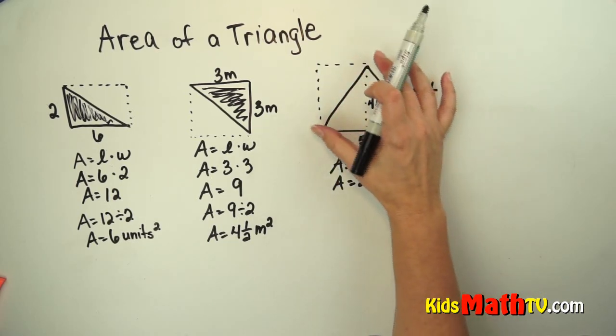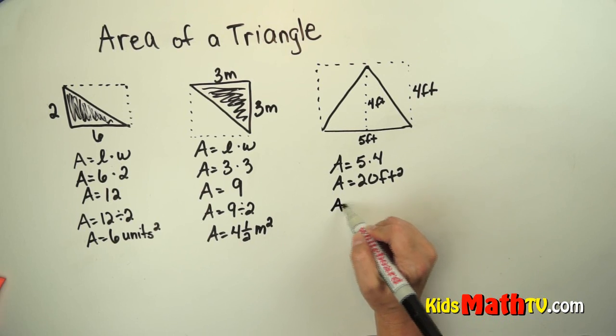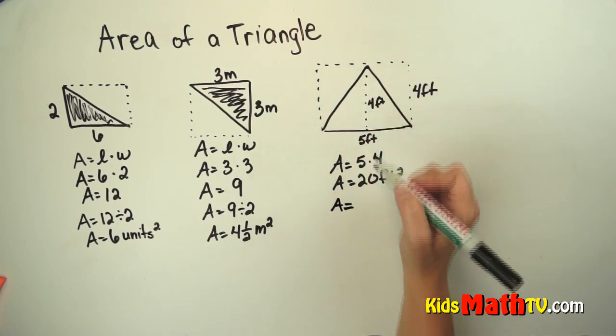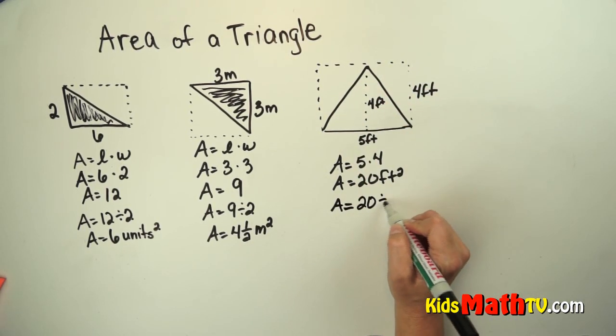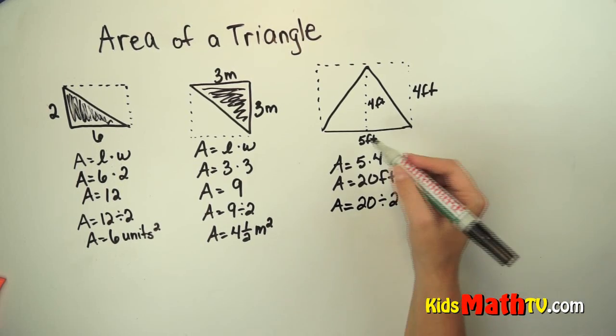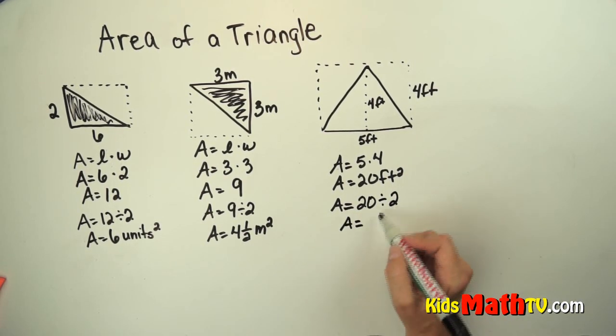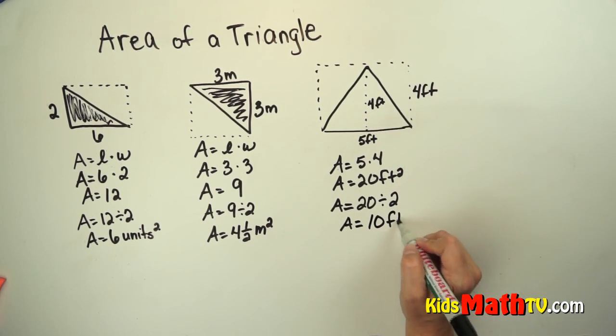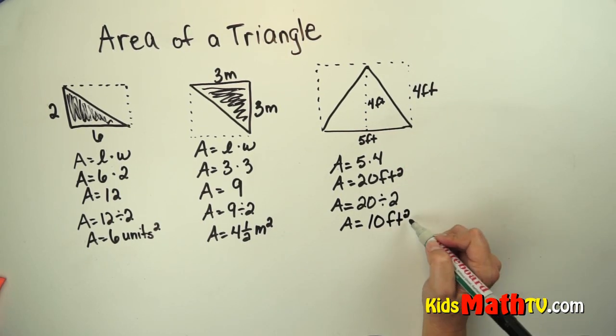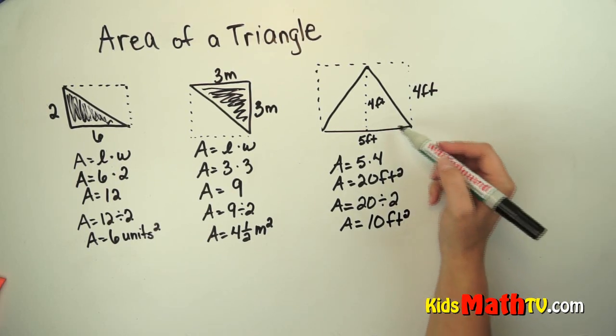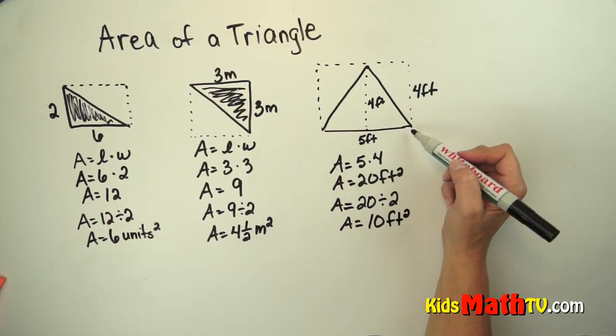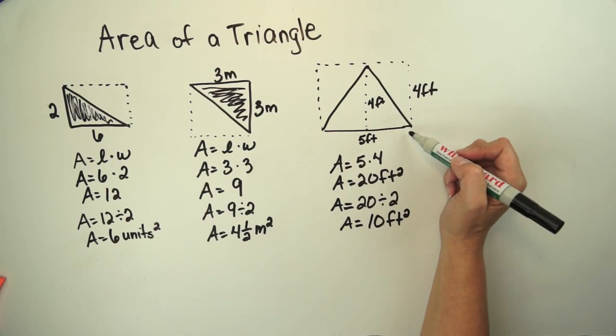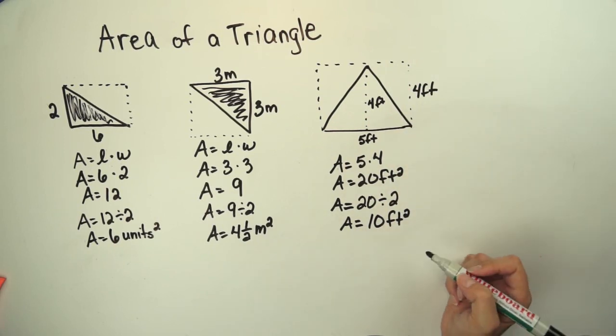So this is double what I need. So I'm going to take the area of this whole rectangle and divide it in half, or divide it by 2. And 20 divided by 2 is 10. My label is feet, and it's area, so we're finding square feet. So the area of this triangle is 10 square feet.